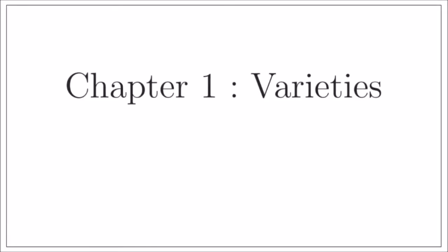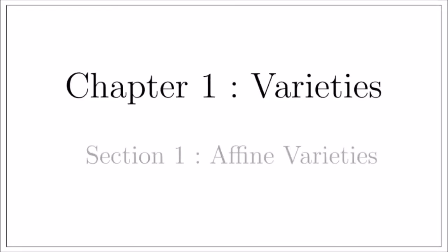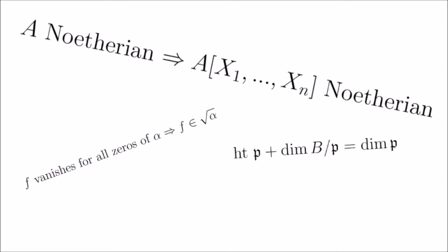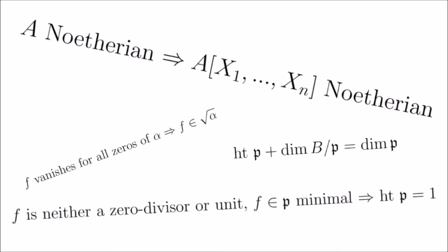Let's begin the series with Chapter 1: Varieties, Section 1: Affine Varieties. For this section, we assume without proof some statements involving the Hilbert basis theorem, the Nullstellensatz, and some results in the dimension theory of k-algebras for a field k, including Krull's Hauptidealsatz.